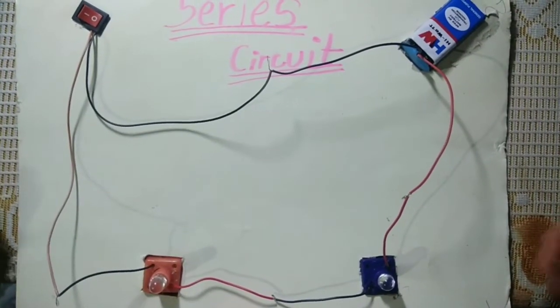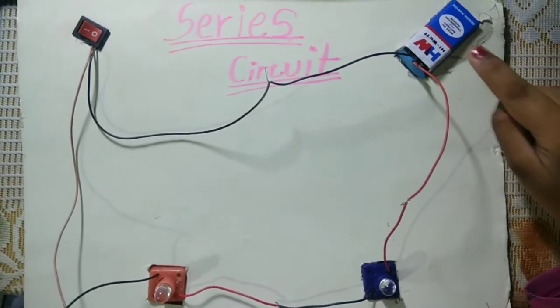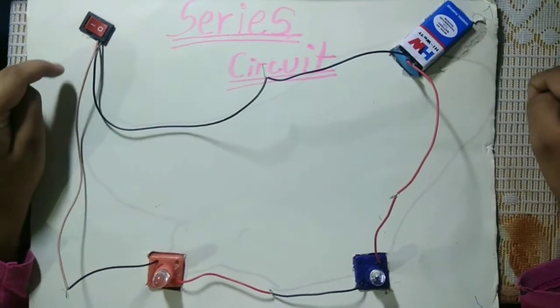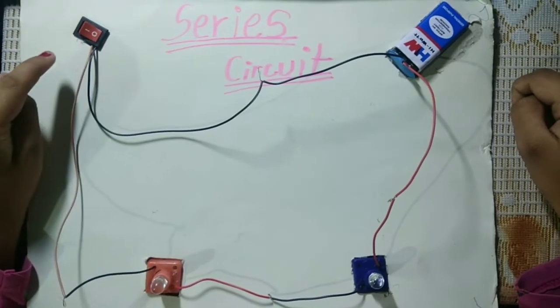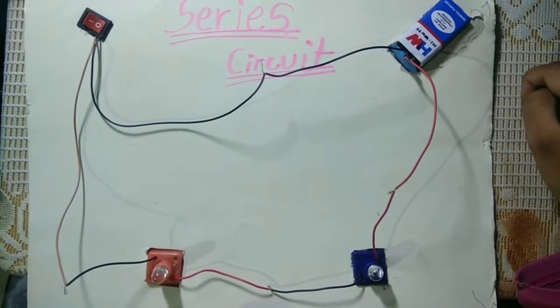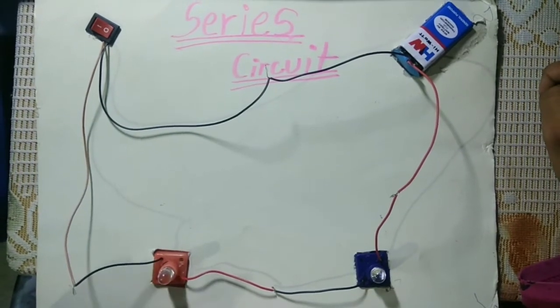This is a series circuit. Here I have attached a battery along with a switch through which I can disconnect the current whenever I want. Here I have attached two LED bulbs in series. Let us see whether it works or not.